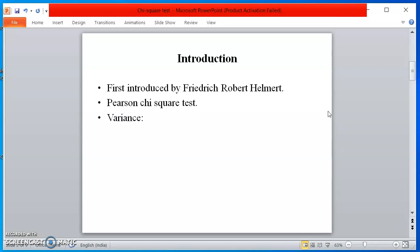Chi-square test was first introduced by Frederick Robert Helmert. Pearson first tested chi-square in the 19th century, and thereafter, chi-square test is also known as Pearson chi-square test.